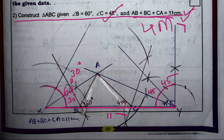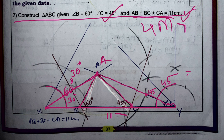After locating point A, bisect XA to get the midpoint — that gives us point B. Also bisect AY to get point C. Join these points to form the triangle. The result is that AB + BC + CA = exactly 11 cm. Practice this construction carefully.